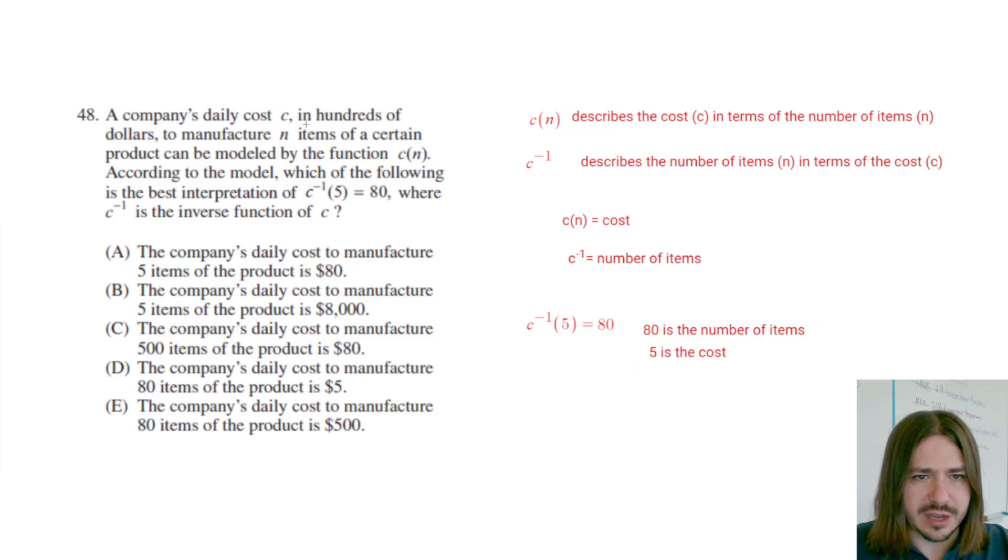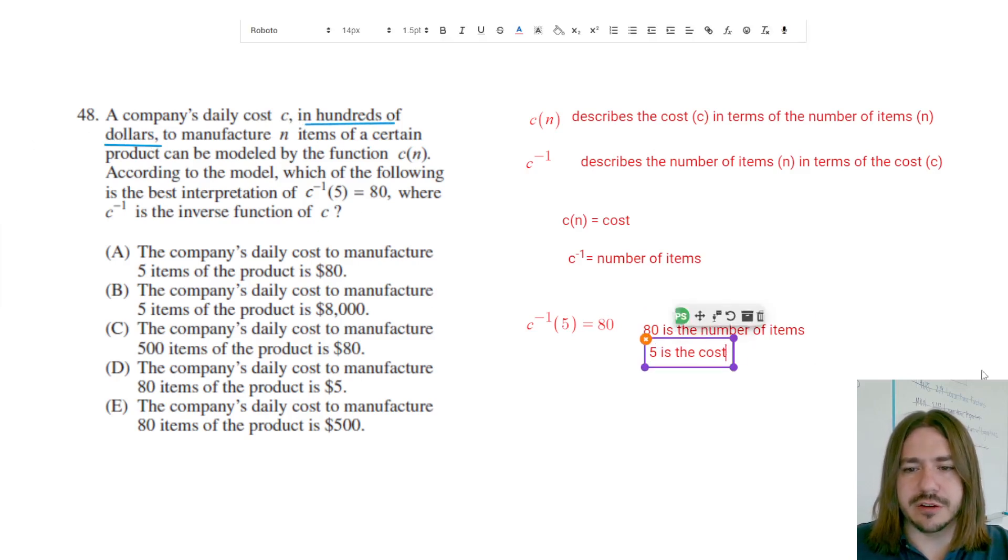And 5 is the cost. One little note here is that in the problem it does say the cost is in hundreds of dollars, so I do want to make a note of that. So the cost here is actually going to be five hundred dollars—the cost in hundreds of dollars.